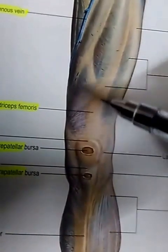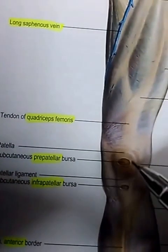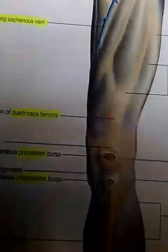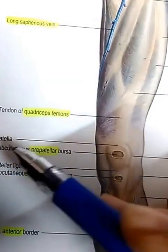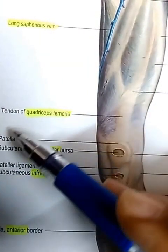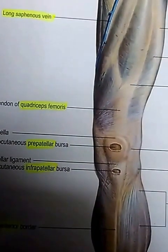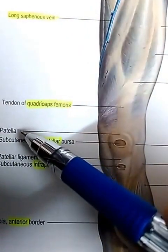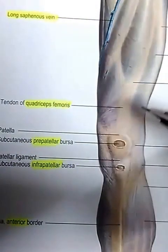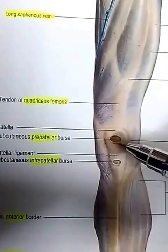This muscle here is the tendon of quadriceps femoris, just above the patella. The patella is a sesamoid bone — in fact, it is the largest sesamoid bone — and it is formed within the tendon of quadriceps femoris.